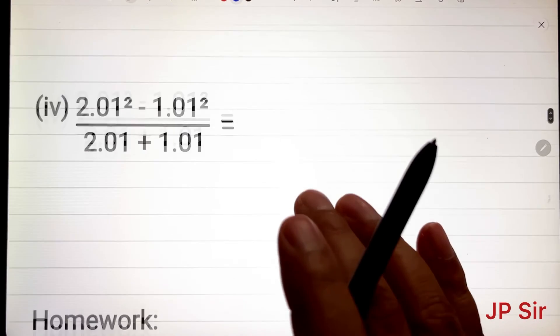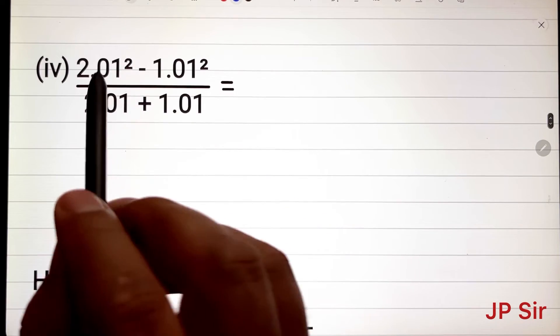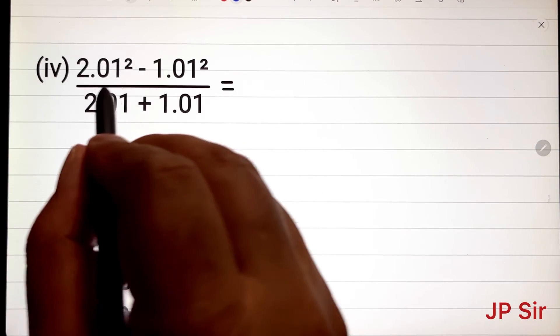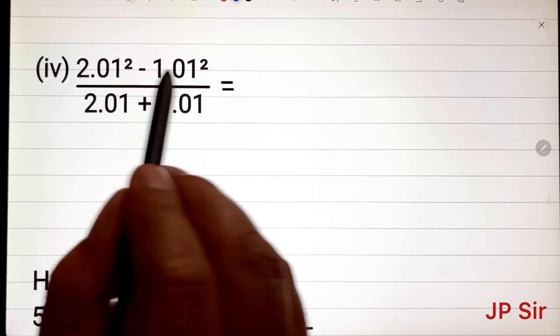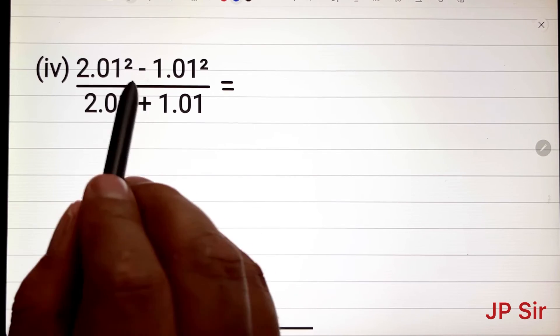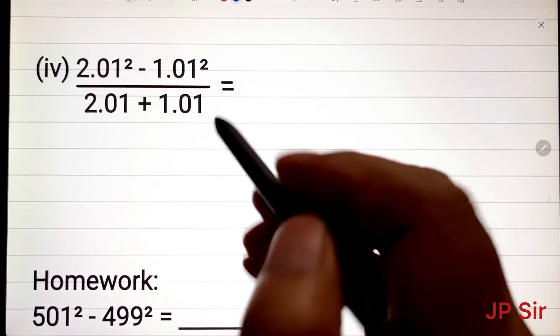Now we have this and I am sure you can do it yourself. This question says we have to simplify this. Again, first we add them because this is the form of that identity that we are doing.